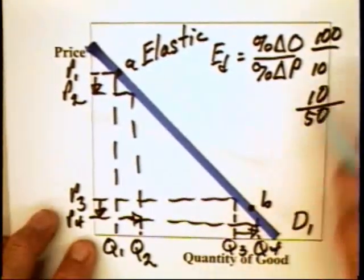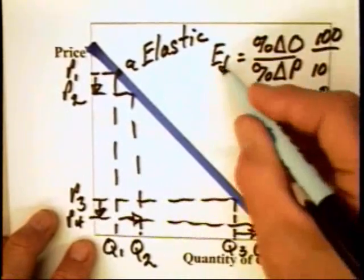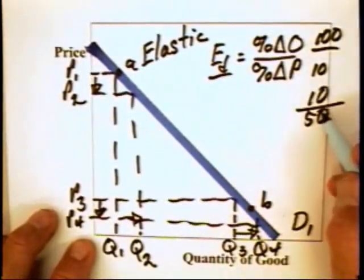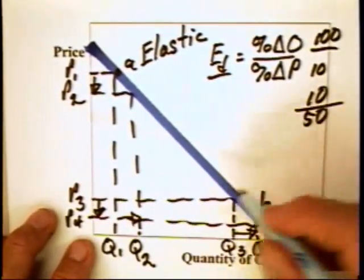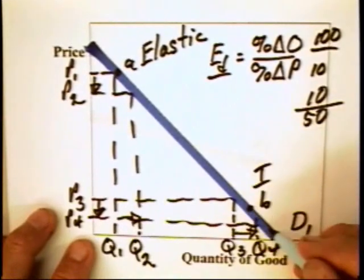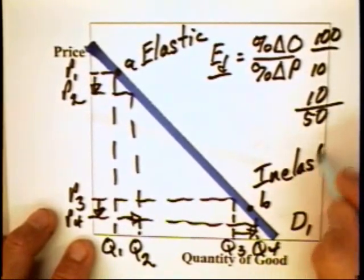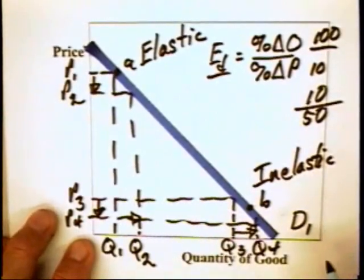Well, in this case, the coefficient of elasticity is less than 1. It's 1/5, in fact. As a result, we would say that down in this range of the demand curve, the demand curve is inelastic.